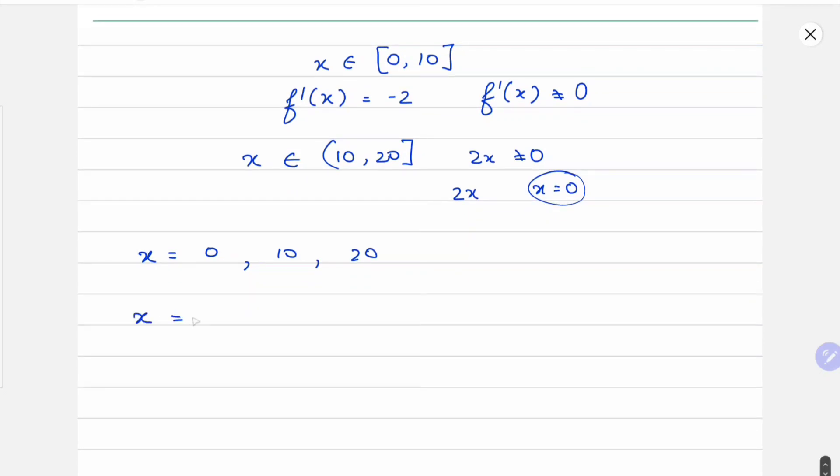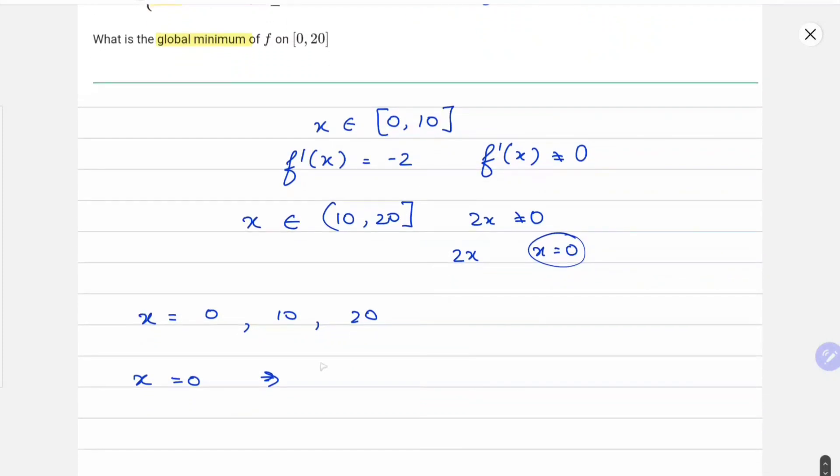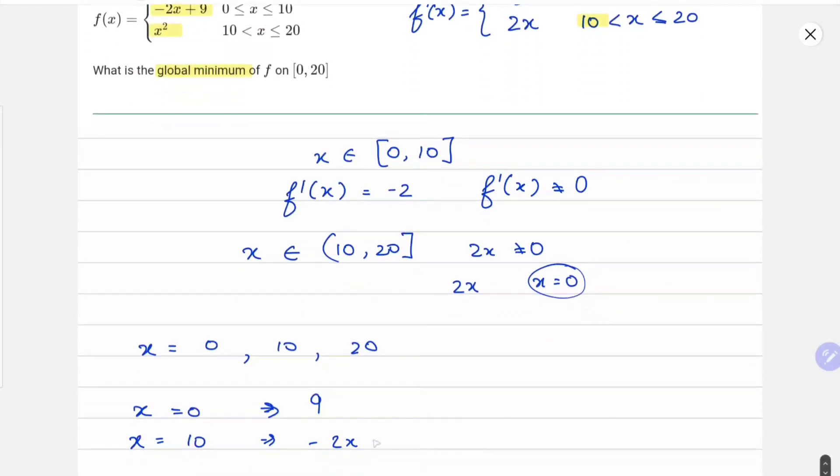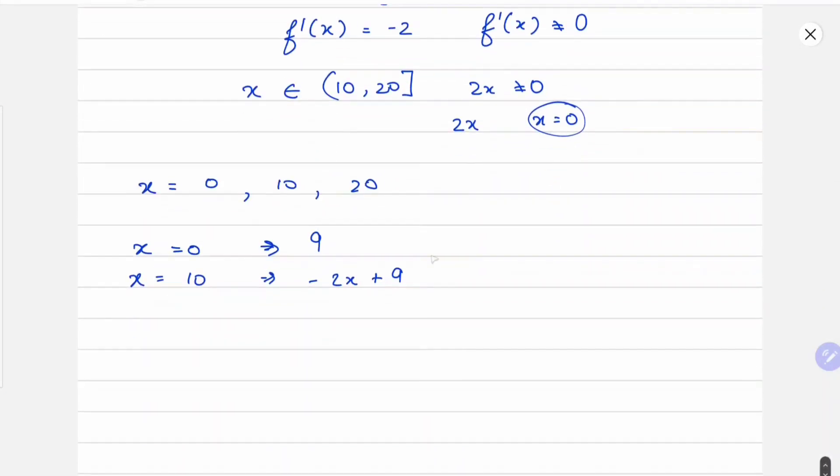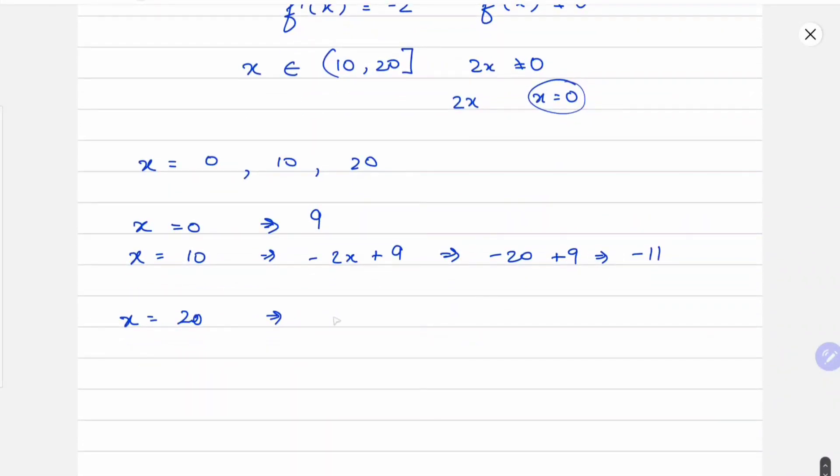For x = 0, we have -2x + 9, so it comes out to be 9. For x = 10, we have -2x + 9 = -20 + 9 = -11. And for x = 20, we have x² = 20² = 400.